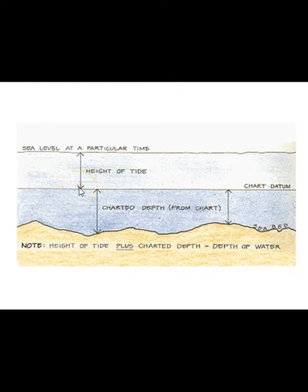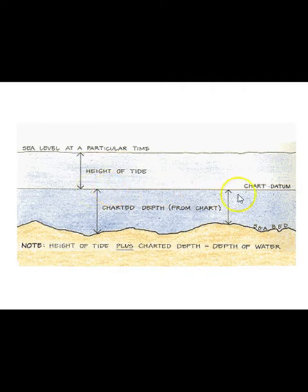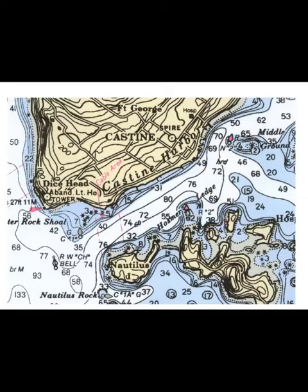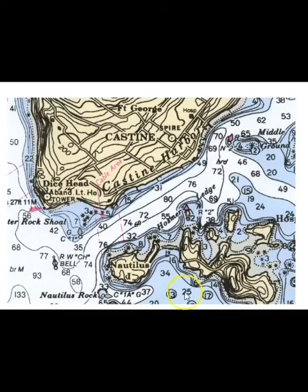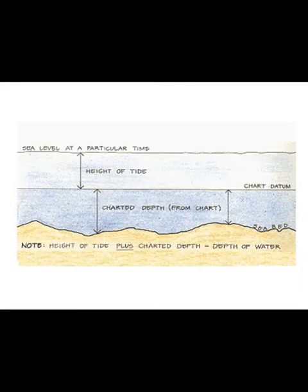The water level on the chart corresponds to the datum level. You could have a plus 2 tide, meaning the height of the tide is 2 feet above datum, giving you 80 plus 2 feet at that spot. If you were at a minus 2 tide, it would be 80 minus 2, giving you 78 feet. You need to figure that out for your scope calculations, and we'll show how in this video.